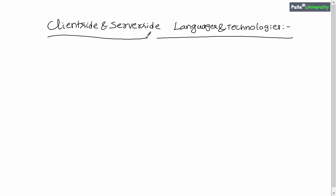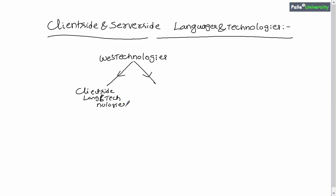In this session we will try to understand client-side and server-side languages and technologies. Web technologies are categorized into two types: client-side languages and technologies, and server-side languages and technologies. To become very good in web technologies, you have to understand both client-side and server-side languages and technologies.